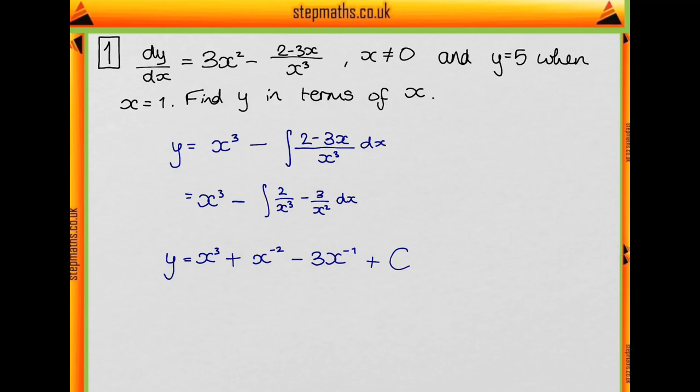And that cancels with this negative here so we get x to the minus 2. We do the same thing to get minus 3x to the minus 1 and remember our plus C. We didn't have a plus C when we integrated here because we could have done but these could just be combined with the plus C here to make a new constant. So it doesn't matter when we include the plus C as long as we do it at some point.